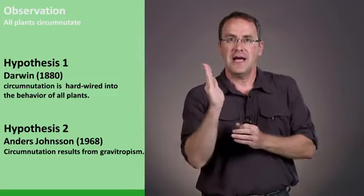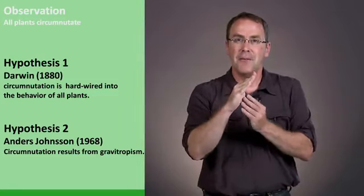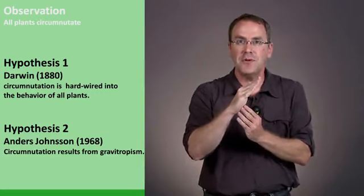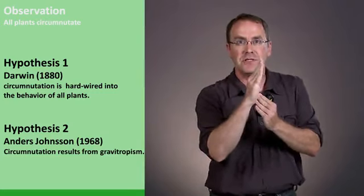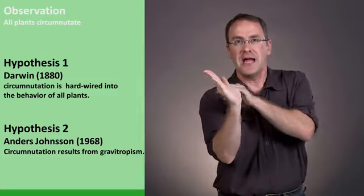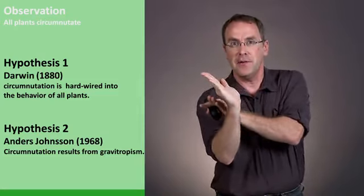What Johnsson said was that as a plant somehow is falling a bit to the left, for example, gravitropism would then make it bend upwards. But it then overshoots and then goes a bit to the right.